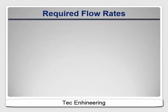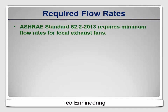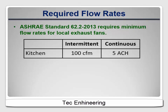ASHRAE Standard 62.2 2013 includes required minimum flow rates for different fan types. The required rates are higher for intermittent systems than for systems that run continuously. For kitchens, intermittent systems like range hoods must provide at least 100 cubic feet per minute of exhaust. Continuous systems must provide at least five air changes per hour in the kitchen, so the bigger the kitchen, the higher the flow rate must be. This has changed a bit in the 2016 version to account for recent trends towards kitchens that are open to the rest of the house; if you're working under that standard, you may need to do some additional research.